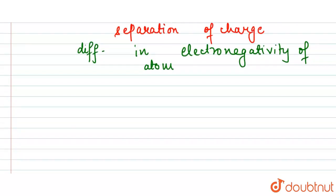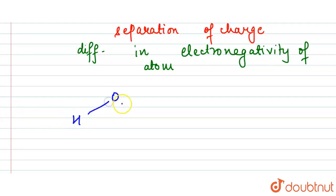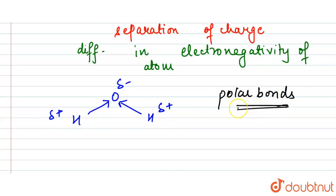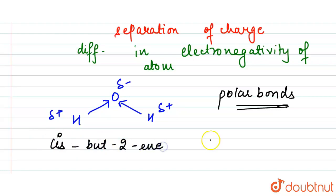We know that H₂O is a polar compound. In water, we have a partial positive charge on hydrogen and a partial negative charge on oxygen. Polarity is the separation of electric charge leading to a molecule having an electric dipole moment with a negative end and a positive end. Polar molecules must contain polar bonds due to the electronegativity difference between bonded atoms, as is the case between hydrogen and oxygen.